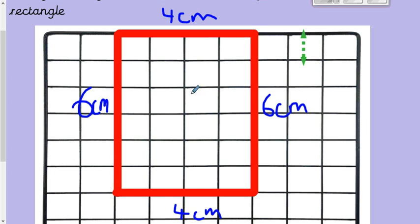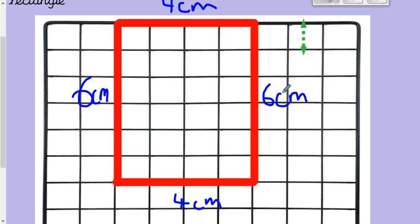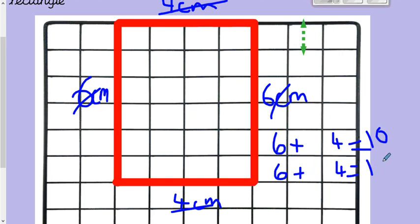Now we have to add them together. So we add 6, add 4. We know that's 10. That's our number bonds. And then we need to add 6 and 4 again, which is 10. And then we need to add these two answers together. So 10 add 10 is 20. So our perimeter is 20.